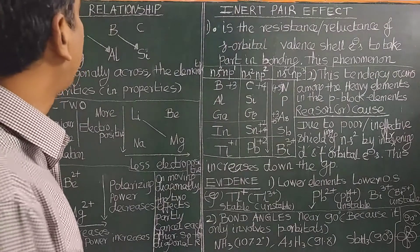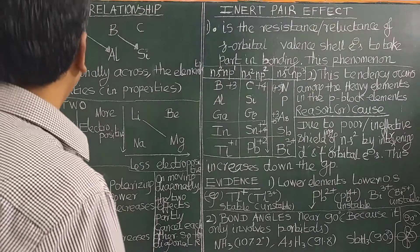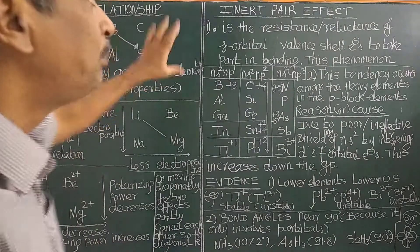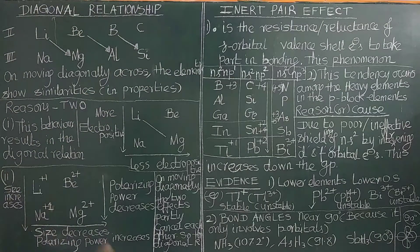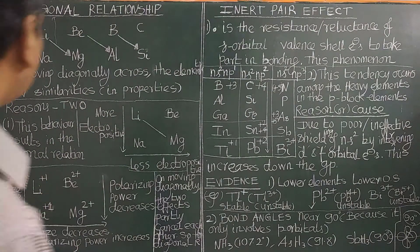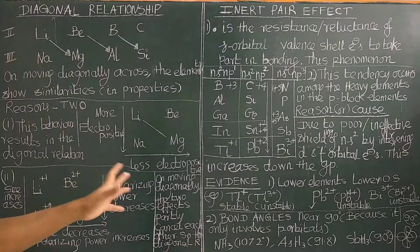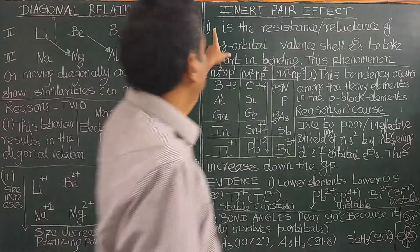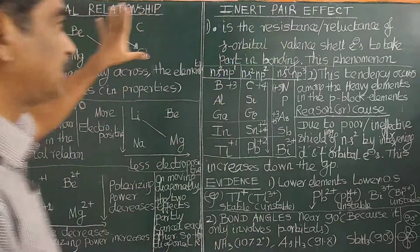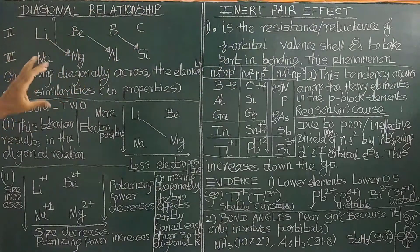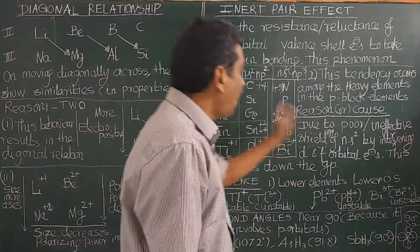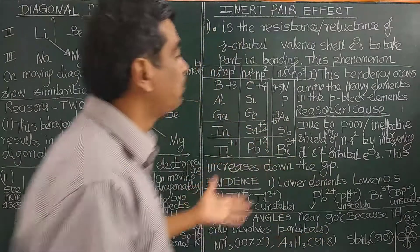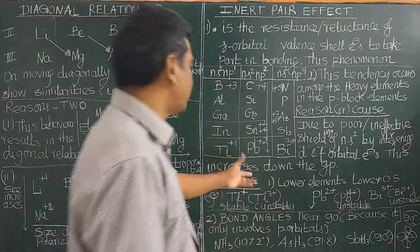Good morning. Today we will study about diagonal relationship in periodic theory. What is diagonal relationship? What is the cause of diagonal relationship? And next, we will also study inert pair effect. What is inert pair effect? Define inert pair effect, what is the cause of inert pair effect, and evidence of inert pair effect.